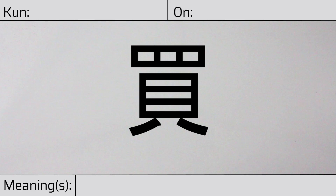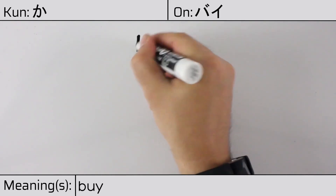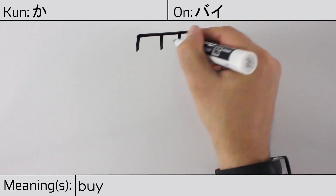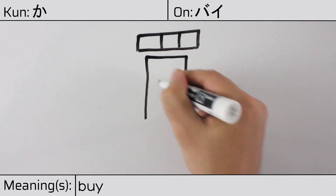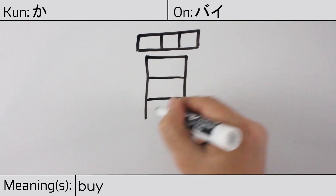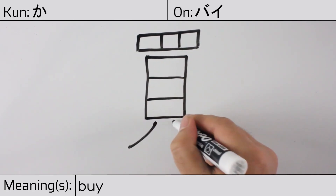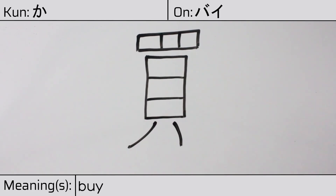Welcome to this lesson on Japanese kanji. Today, we'll be discussing this character. This kanji has kunyomi or Japanese reading of ka, and it has an onyomi or Chinese reading of bai. This character has the meaning buy. Here is the stroke order.